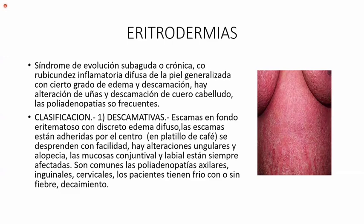¿Cómo se clasifica? Primero, en descamativas: son escamas en fondo eritematoso con discreto edema difuso. Las escamas están adheridas por el centro, como el platillo de café, y se desprenden con facilidad. Hay alteraciones ungulares; cuando vemos un eritema nos fijamos en las uñas, si están alteradas es eritrodermia. Hay alopecia; las mucosas conjuntival y labial están siempre afectadas, secas, a veces ulcerosas.